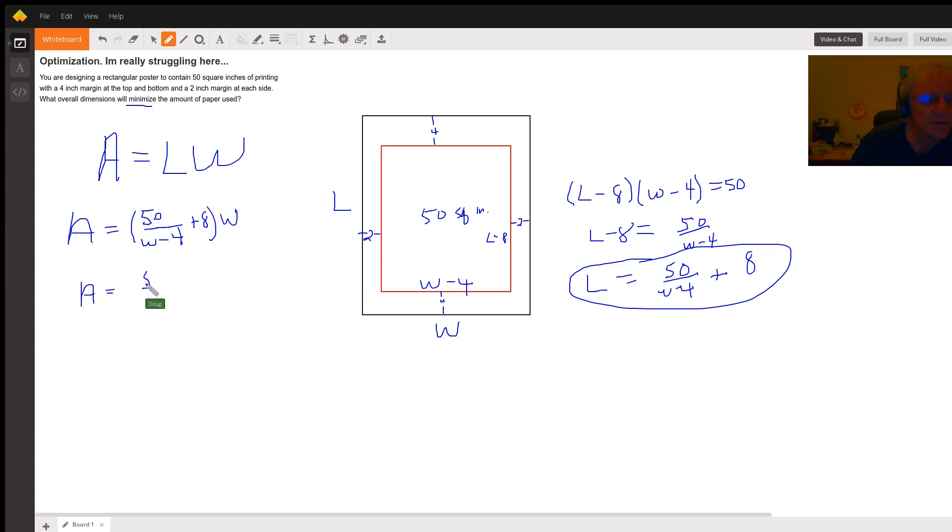And if we distribute that W, we get 50W over W minus 4 plus 8W. Now, what remains is a few things. We want to find the derivative of A with respect to W. So, we will use the quotient rule here.